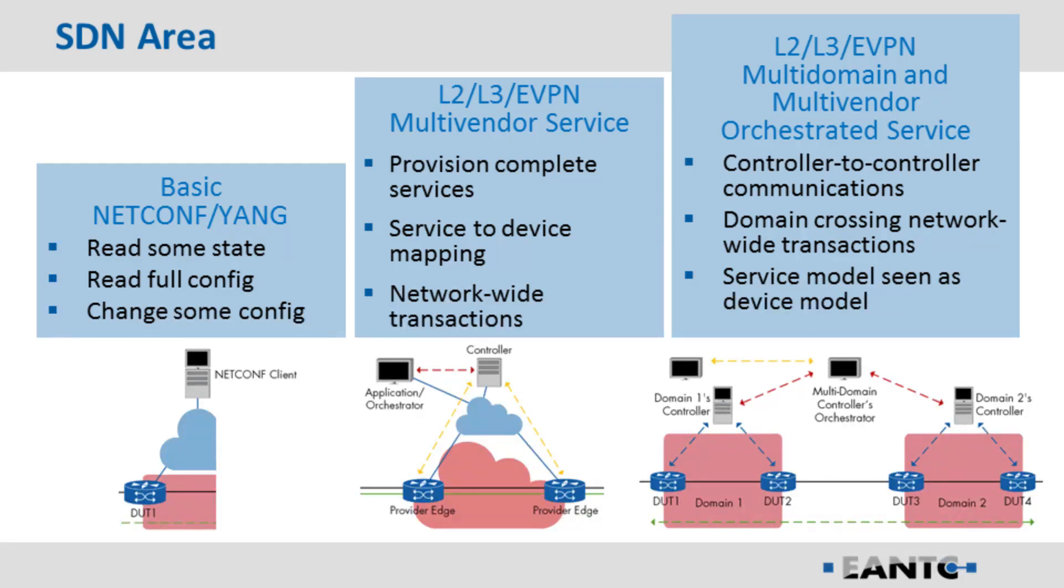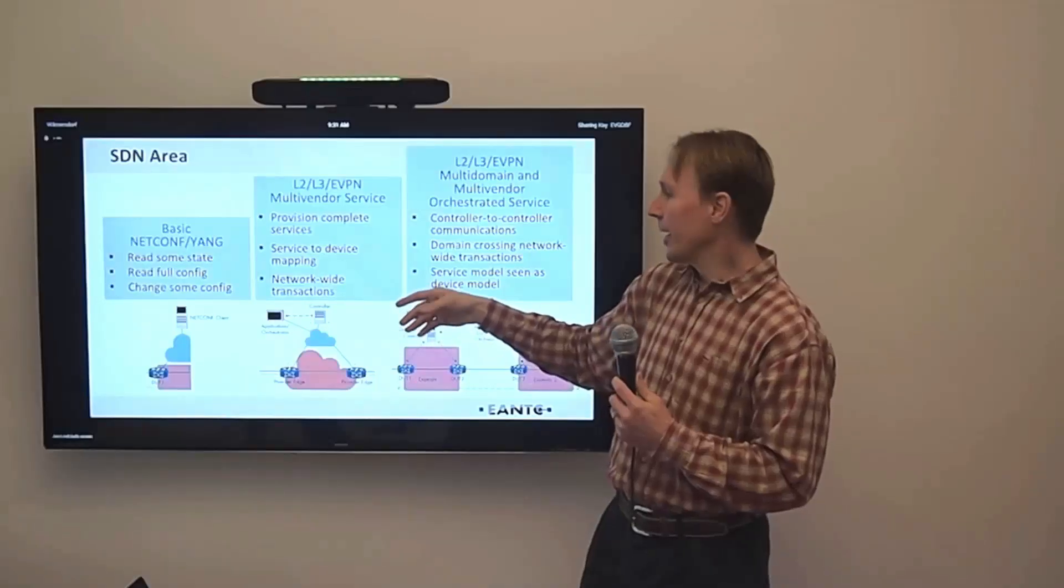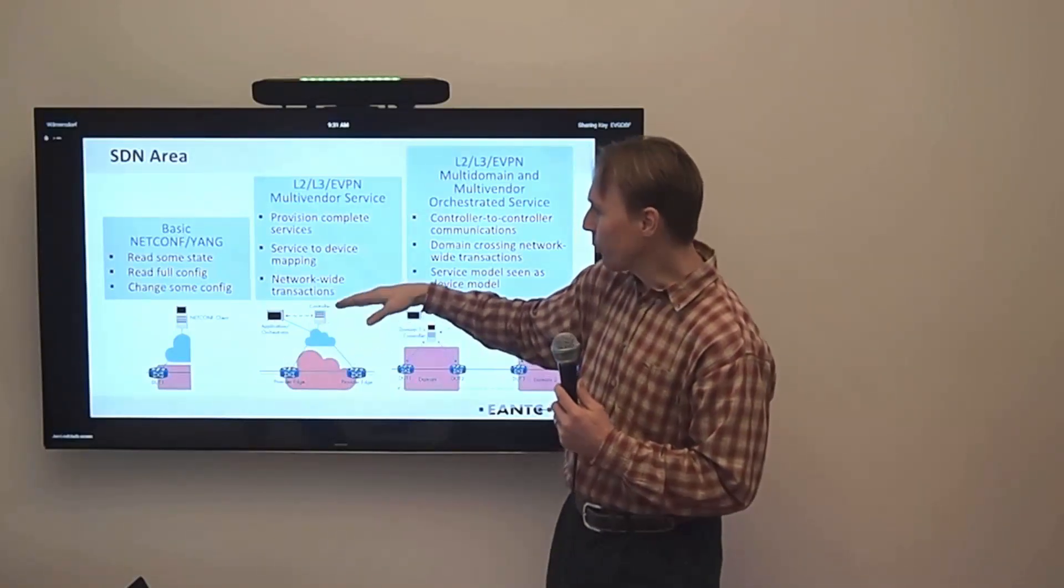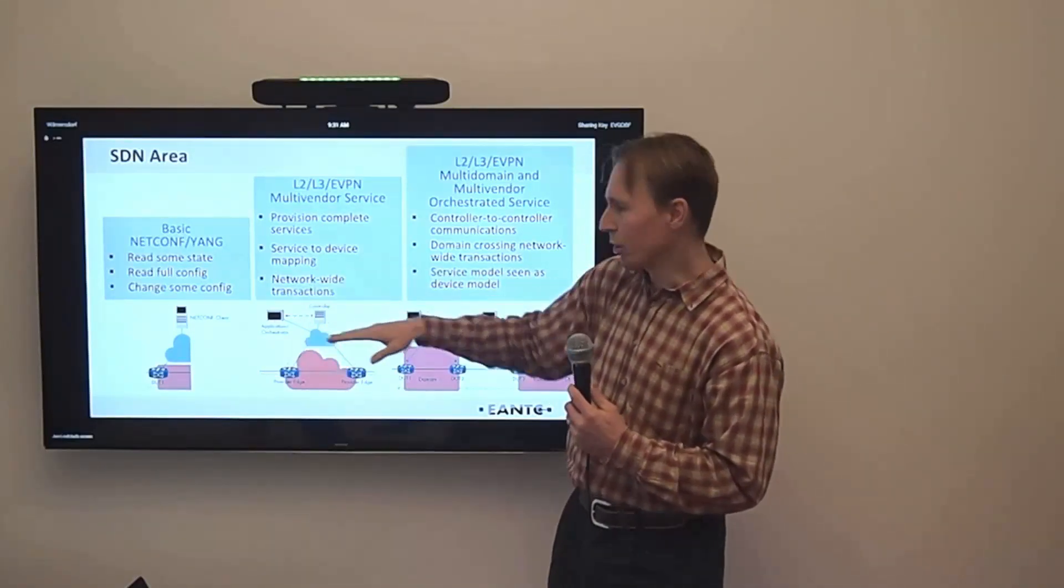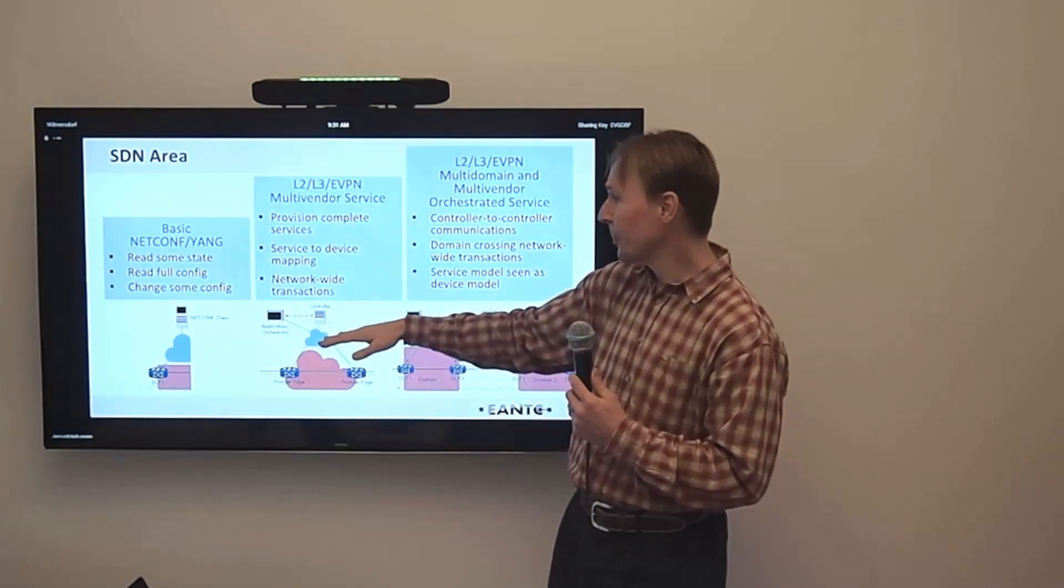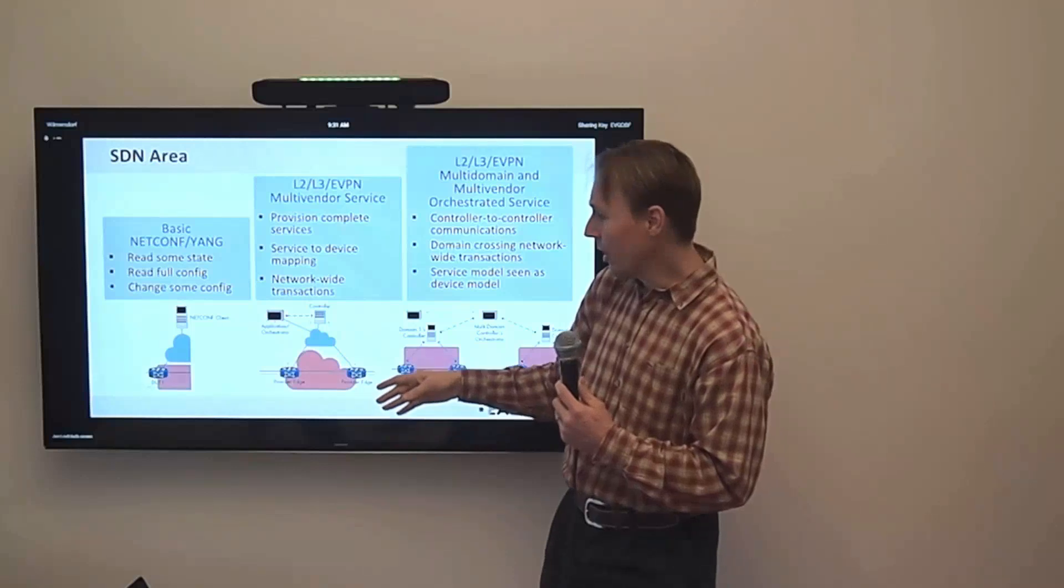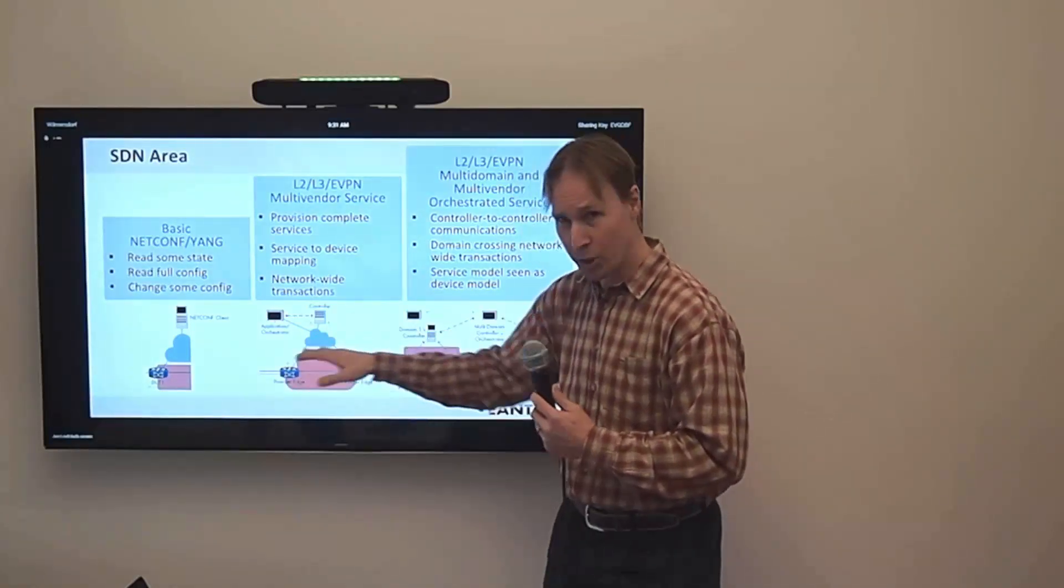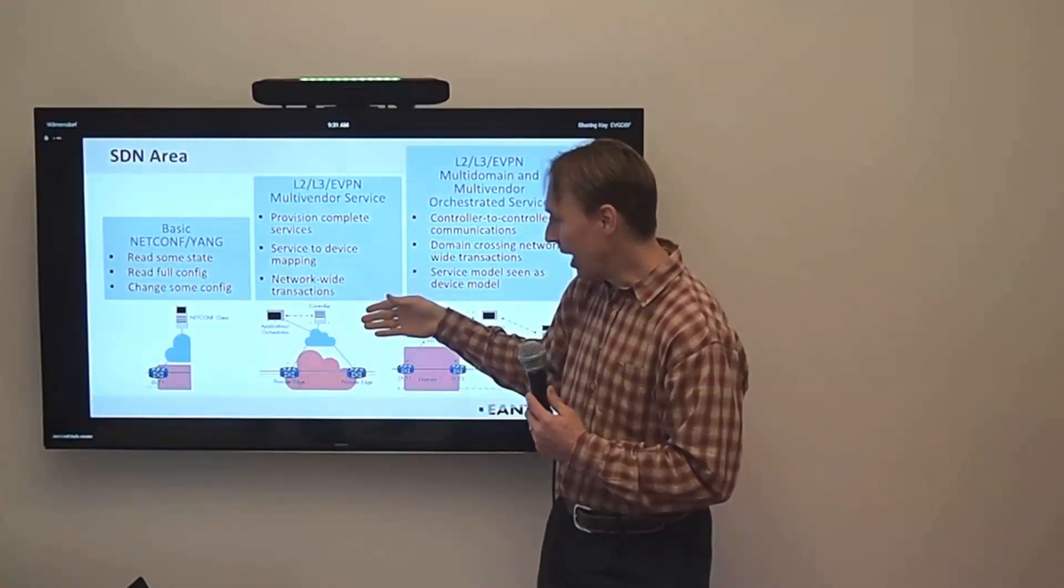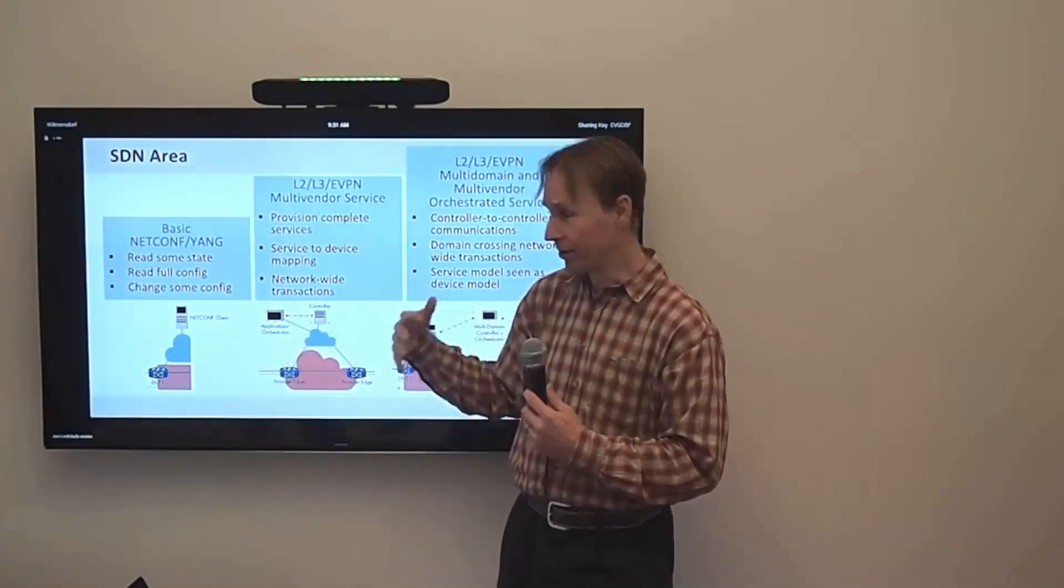Then, for those up to some higher levels, we have the service provisioning, which provisions a complete service. Everything goes in, everything goes out. And it includes a service model here in the controller, so you have a high-level intent that's being mapped down to the network or to the device level here. And the whole thing here is then provisioned as a network-wide transaction. So if anything goes wrong, nothing happens anywhere. And if this service is activated, it's activated across the whole network at the same time.